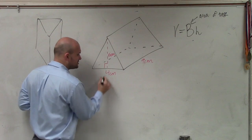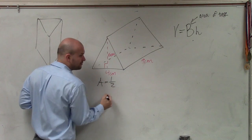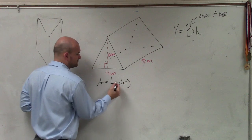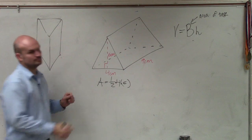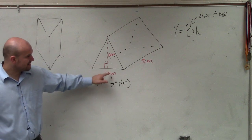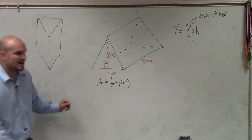So the area of this triangle, since it's a triangular prism, is ½ base times height. Base times height, 4 times 6 is 24, times ½ equals 12.